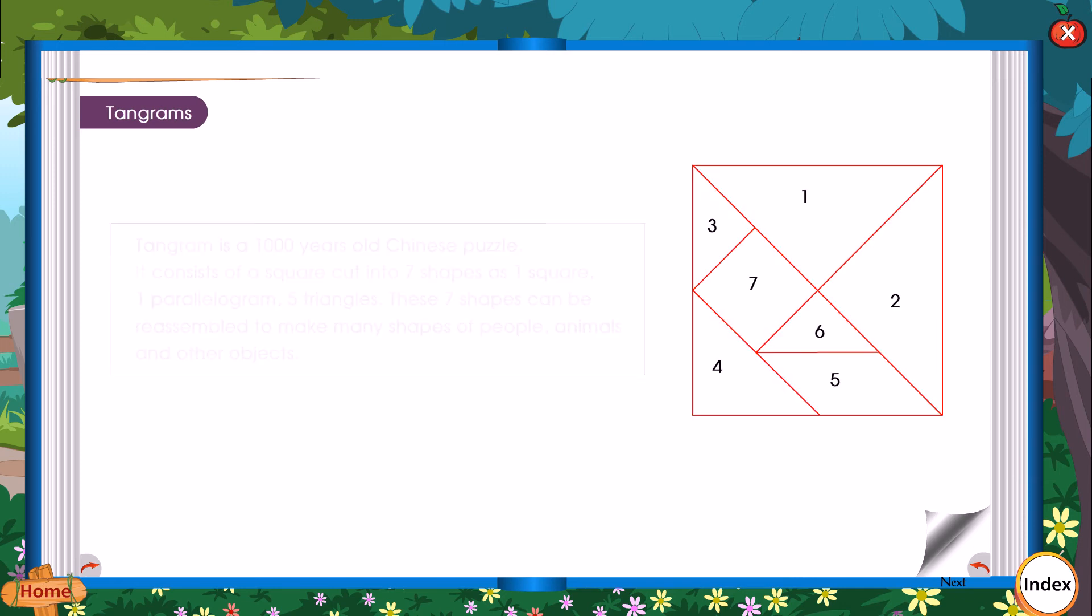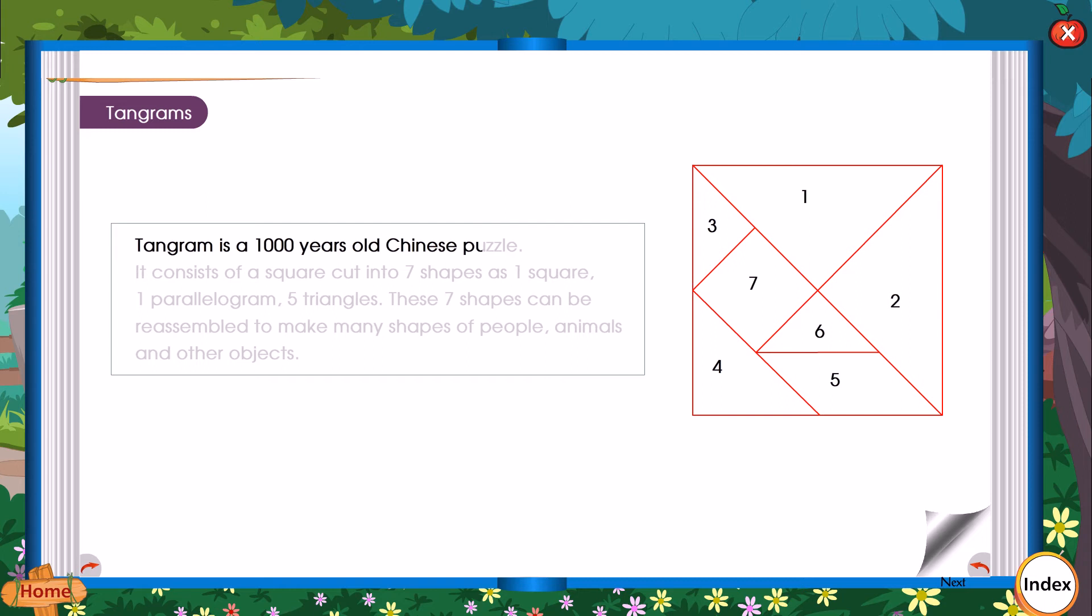Tangrams. Tangram is a 1000 years old Chinese puzzle. It consists of a square cut into 7 shapes: one square, one parallelogram, five triangles. These 7 shapes can be reassembled to make many shapes of people, animals and other objects.